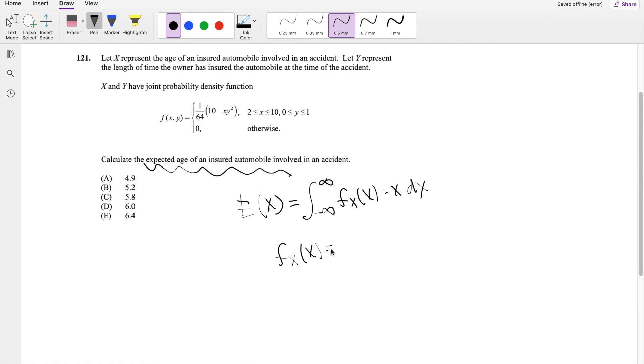So f of X is equal to, by the definition of this, the integral of f of X, Y dY, integrating from the lower limits of Y to the upper limits of Y. So the lower limit of Y is equal to 0, and the upper limit here is going to be 1, of 1 over 64, 10 minus X, Y squared dY.